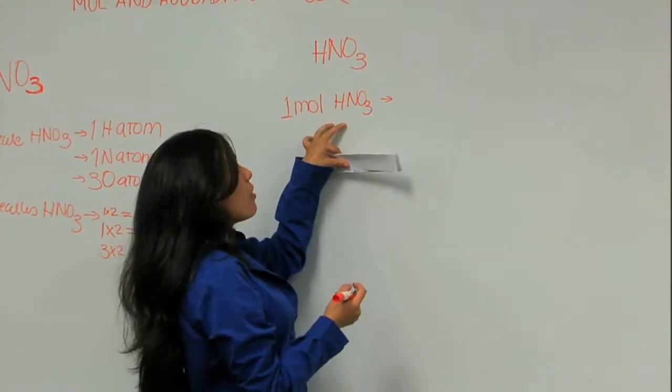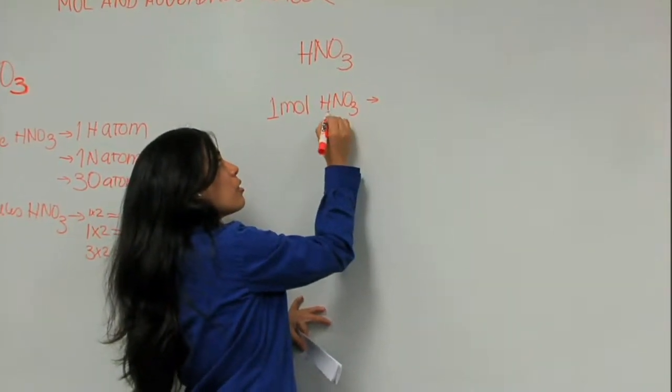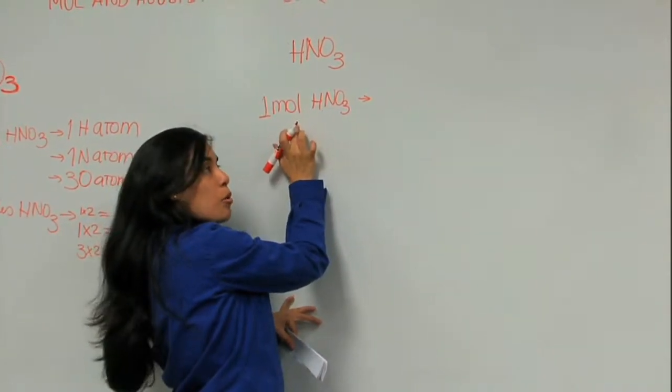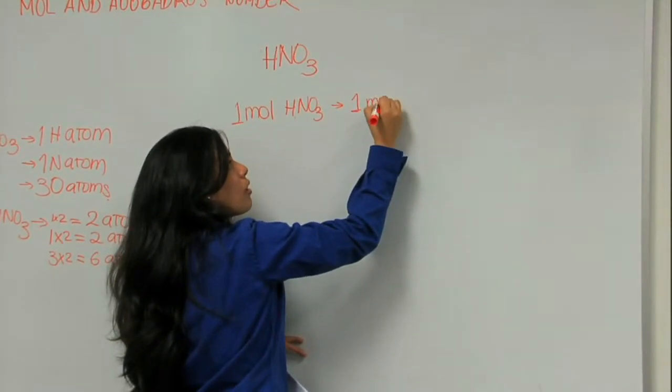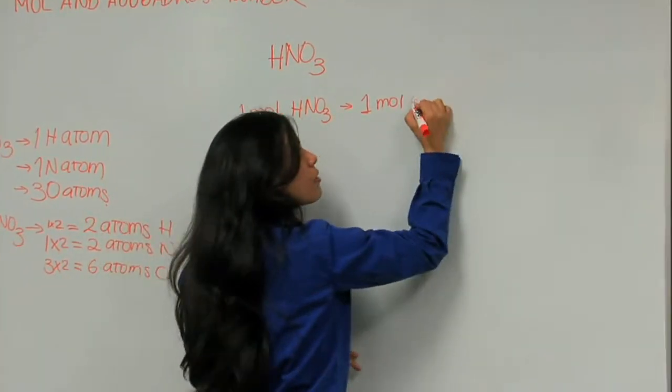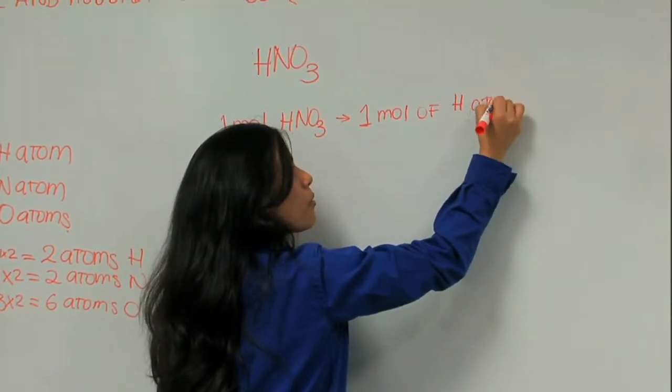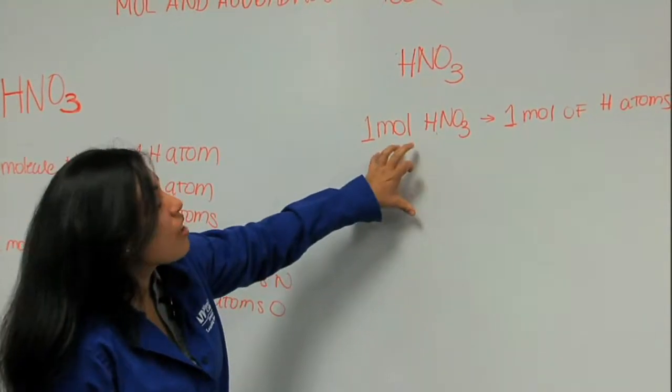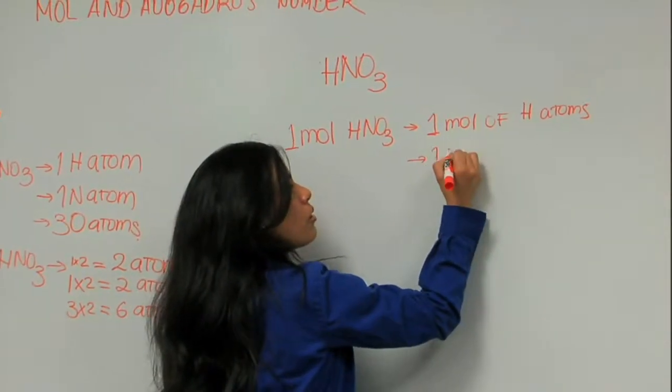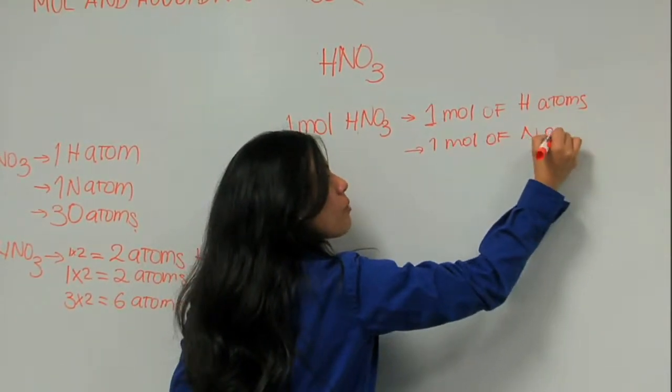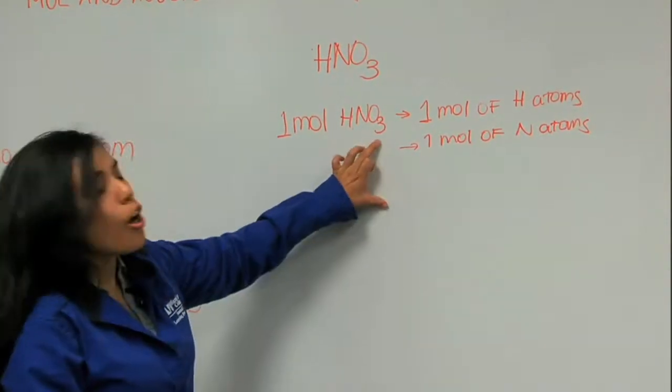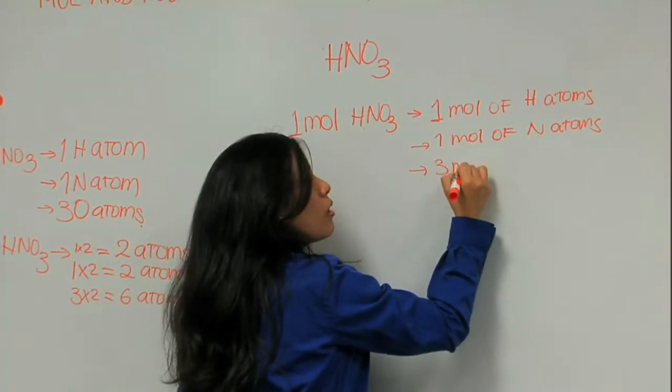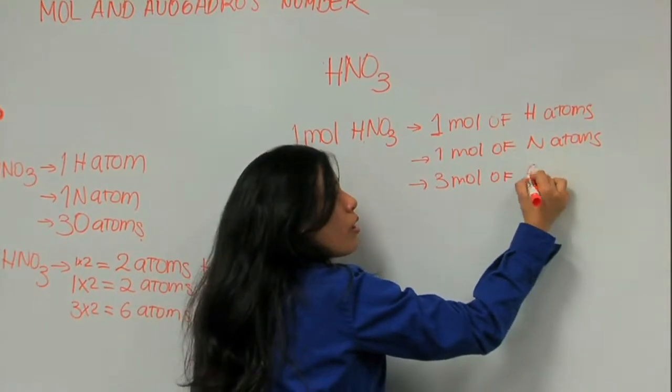In one mole of nitric acid, I'm going to have, remember that the subscript for hydrogen is one, so one times one mole is one mole of hydrogen atoms. Nitrogen is one times one mole, giving me one mole of nitrogen atoms. Oxygen is three, so three times one mole is going to be three mole of oxygen atoms.